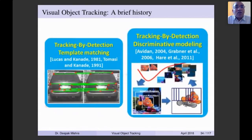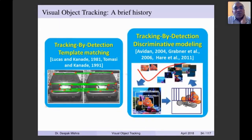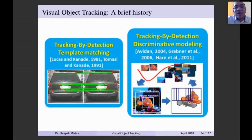People also did tracking by detection and template matching. The very famous work by Lucas, Kanade, and Tomasi in 1991 takes a single frame, finds corners in the object, matches corners across frames, and establishes correspondences — if similarity is above a certain threshold, the object is considered detected in the next frame. This approach is computationally intensive and was one of the earlier tracking by detection methods.